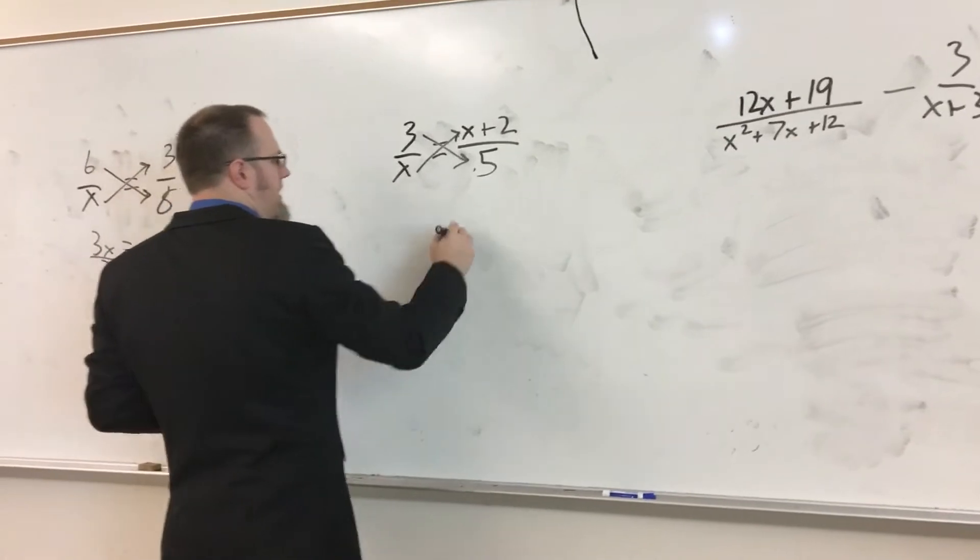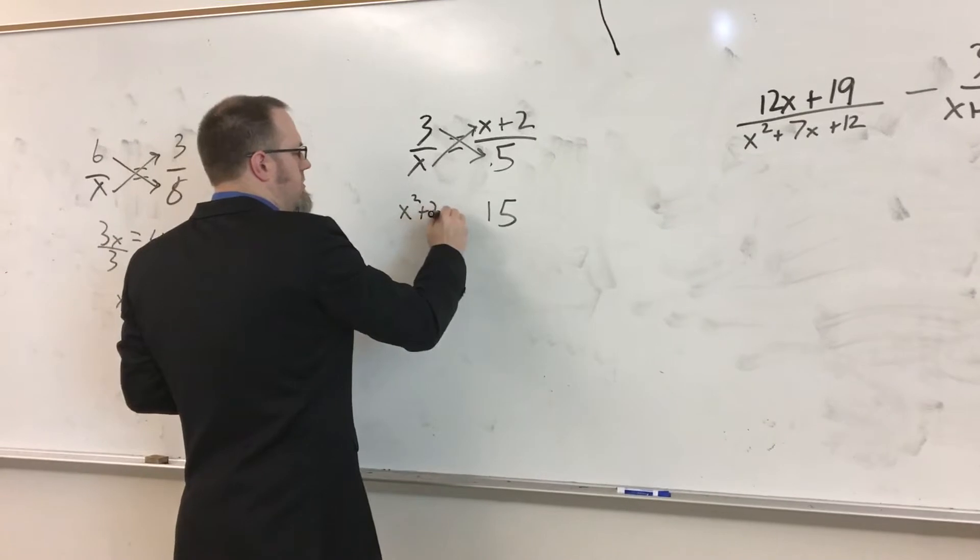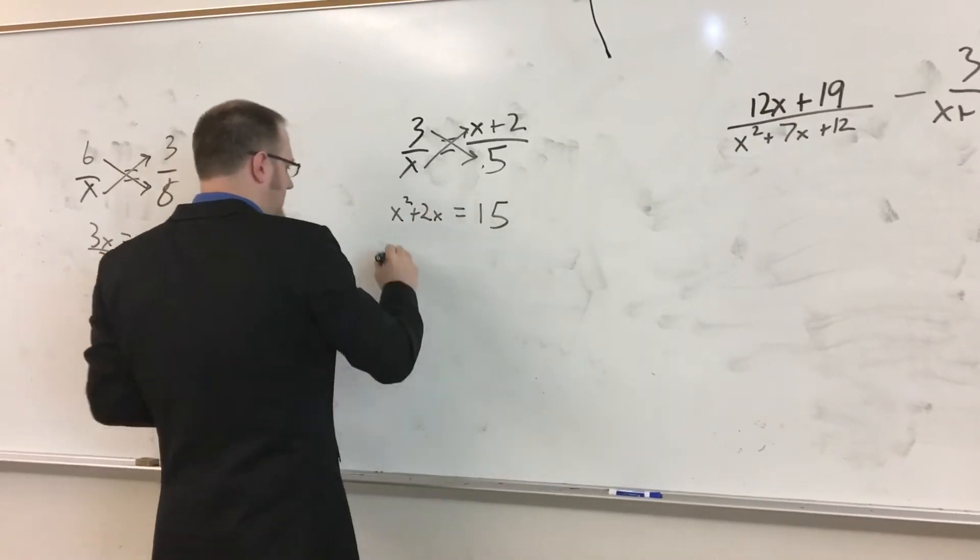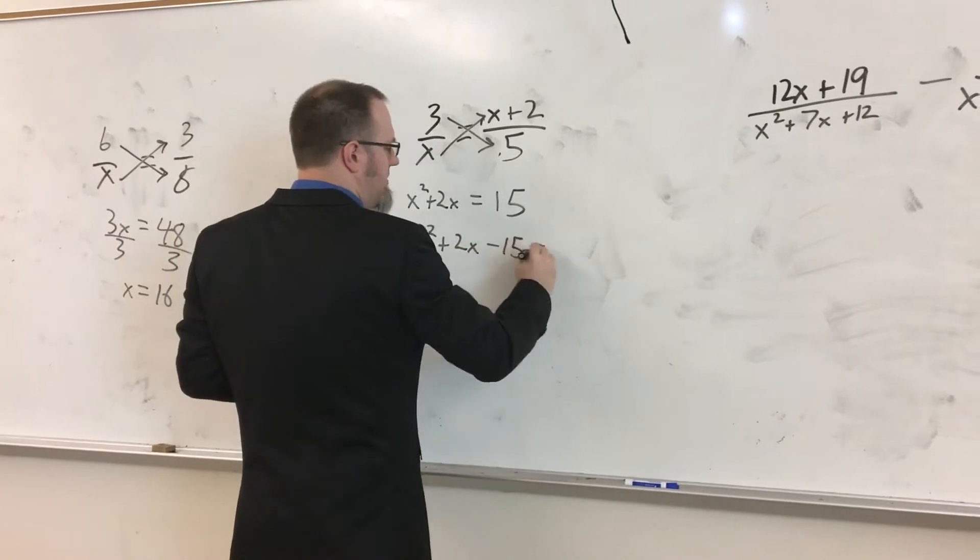So we go, 3 times 5 is, of course, 15. x times (x+2) is going to give us x²+2x. So that's equal to 15. So that's x²+2x-15 equals 0.